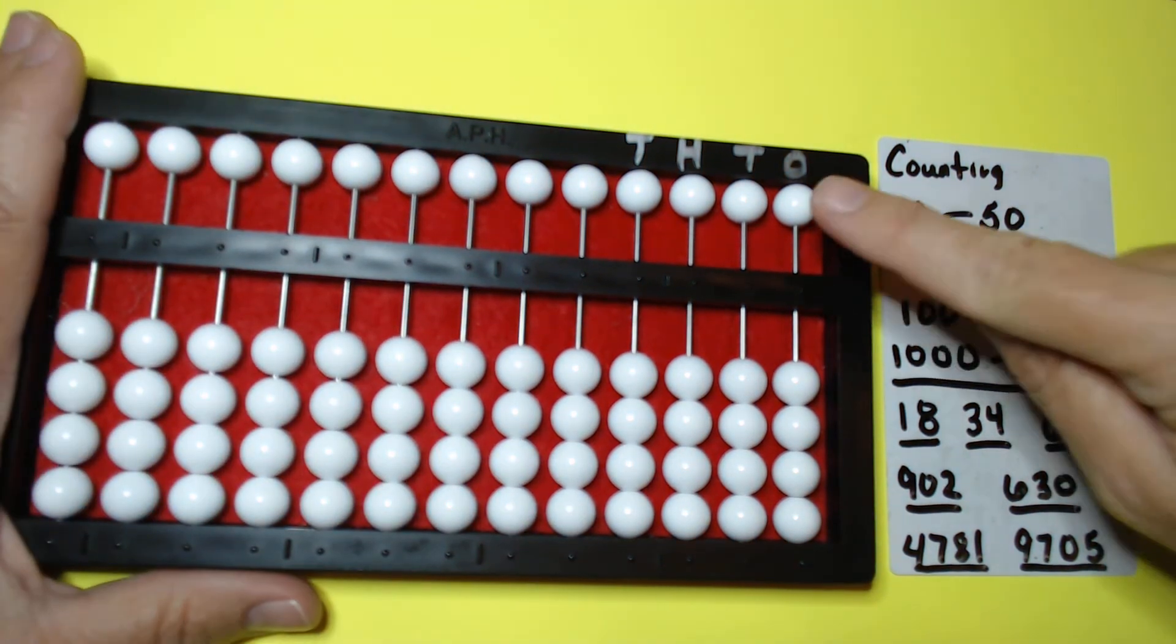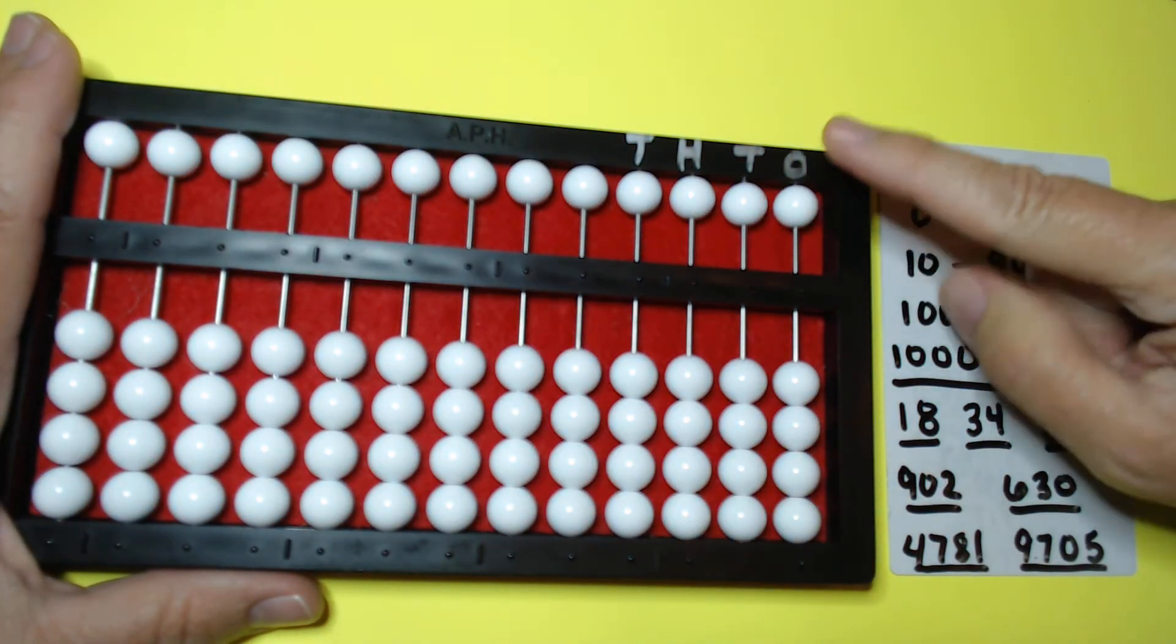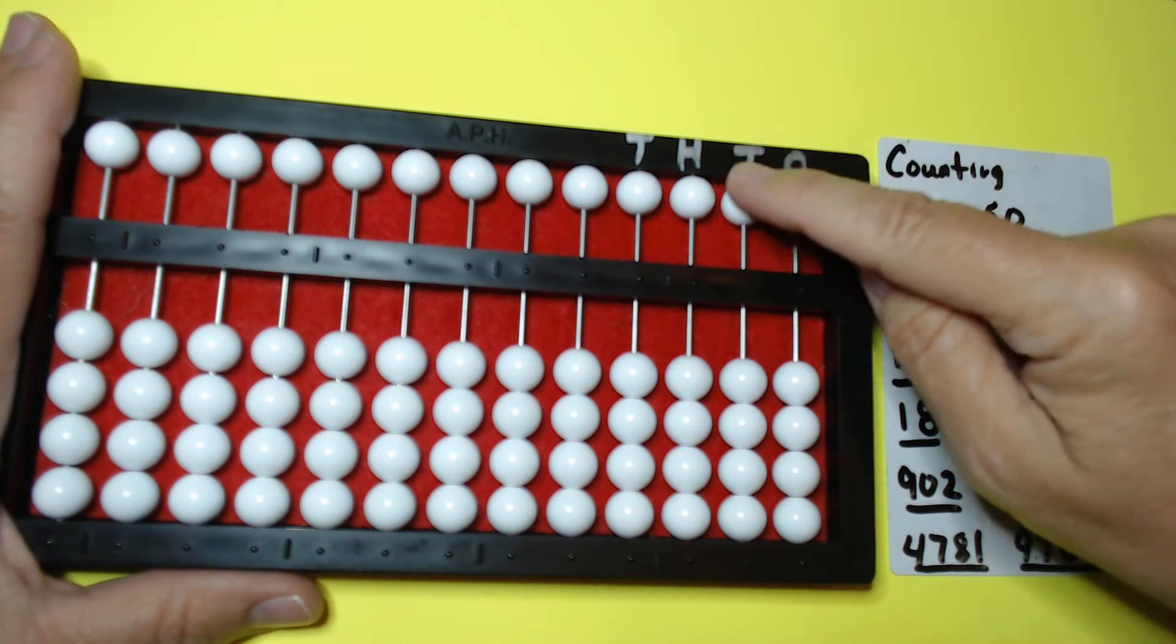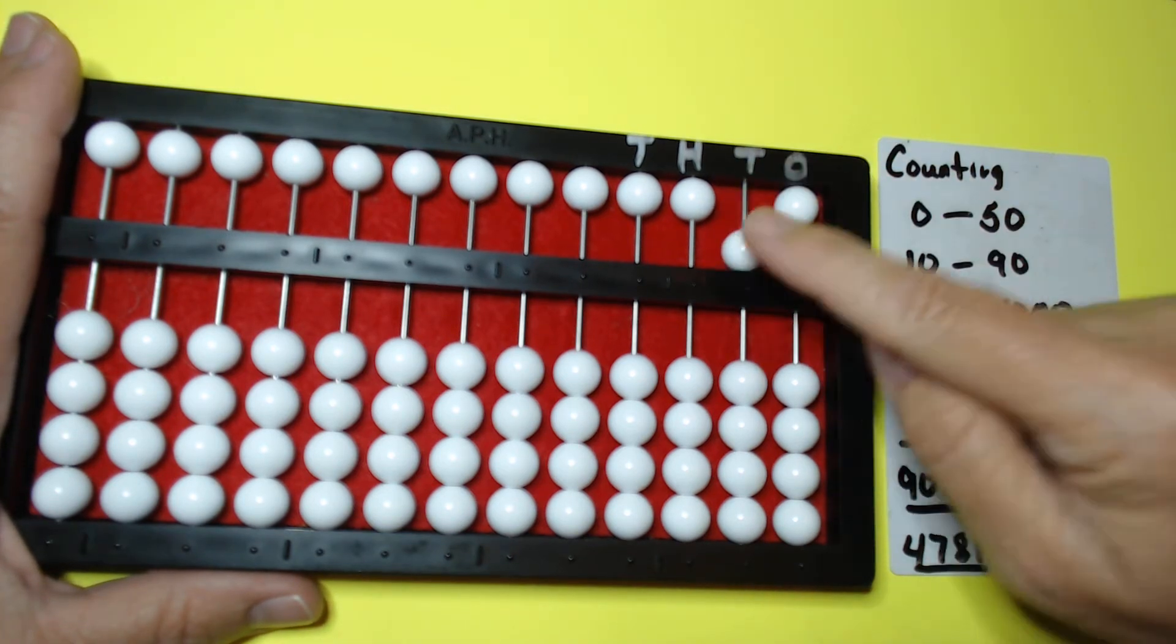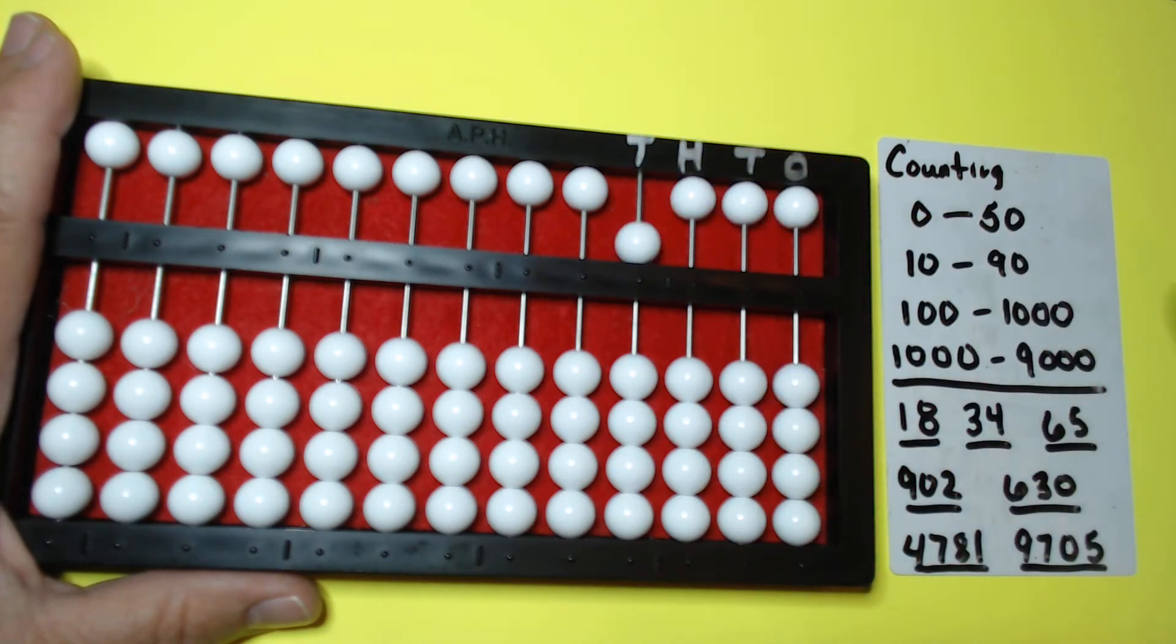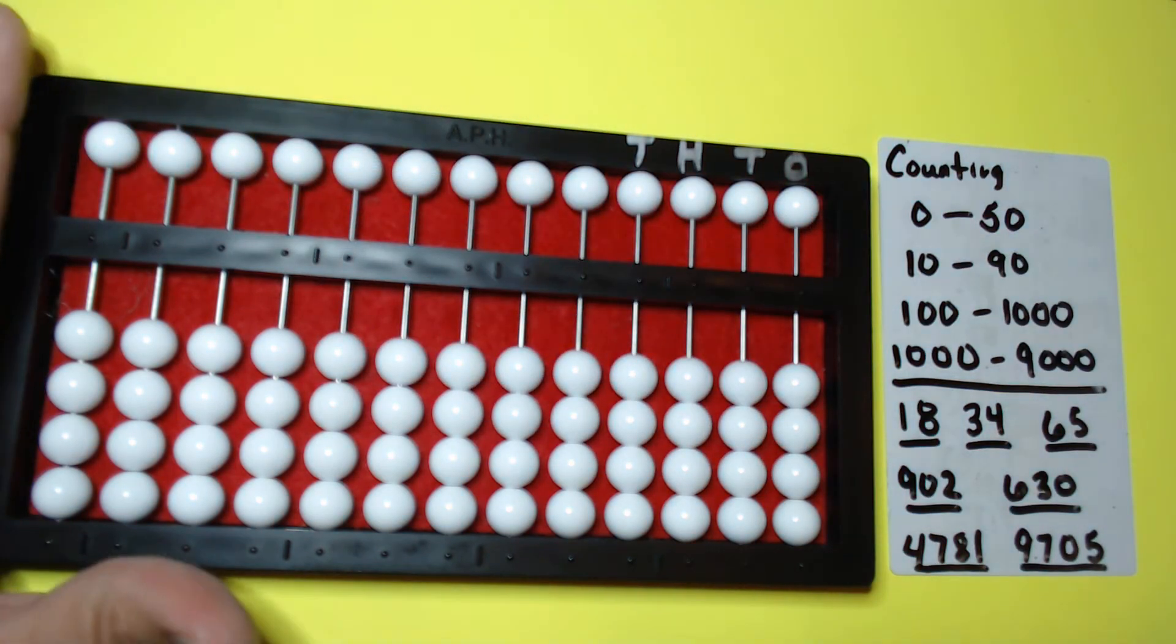Let me tell you a little bit something about these beads up here. I call these the five beads and that is because if I set this bead, that is five. If I set this bead in the ten column, that's fifty. Five hundred. Five thousand. So these top beads are called the five beads.